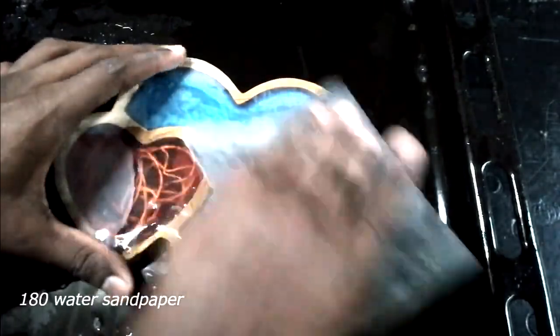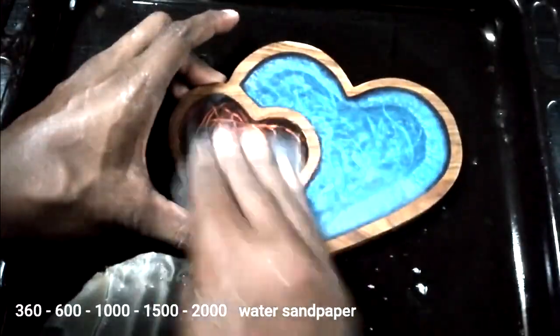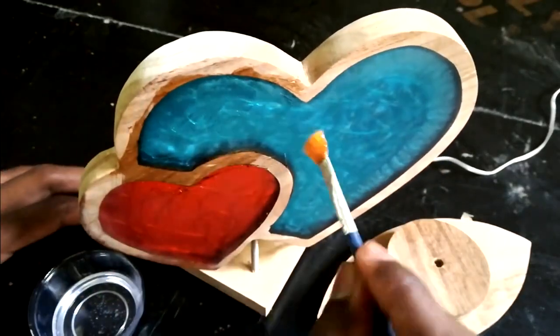The night light in the form of a heart made of epoxy resin is almost ready. The final steps are to fix and varnish. Such items demand a lot of talent and labor to pour.